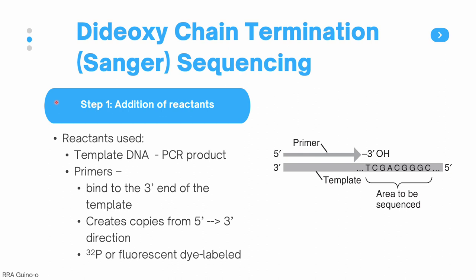The first step in Sanger sequencing is the addition of the different reactants. We have the template DNA, which will be your PCR product, and a primer that binds to the three prime end of the template, creating copies from the five prime end to the three prime end. Sometimes the primer can be conjugated with a radioactive phosphorus or a fluorescent dye as a label.